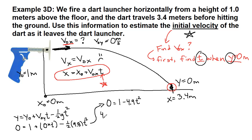So we're going to add 4.9 t squared to both sides. We will divide both sides by 4.9. And then we realize that in order to get t, we're going to have to take the square root of all of that. So 1.0 divided by 4.9. When we take the square root, we get 0.452 seconds.